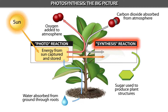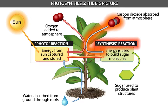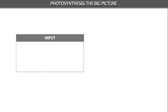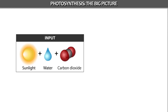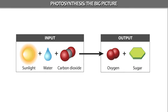In the synthesis segment, the energy in the energy storage molecules is used to build sugar molecules from carbon dioxide in the air. In short, the input for photosynthesis consists of sunlight, water, and carbon dioxide, while the output consists of oxygen and sugar.